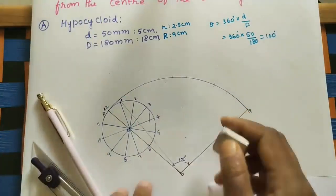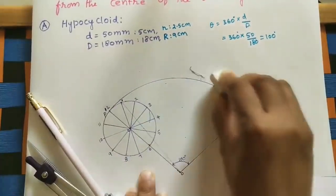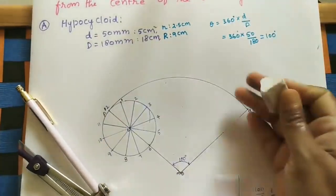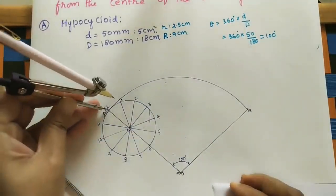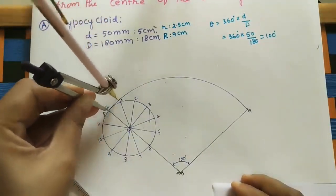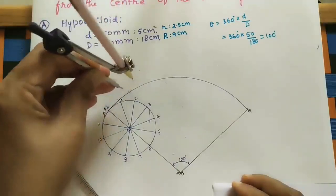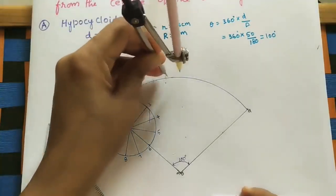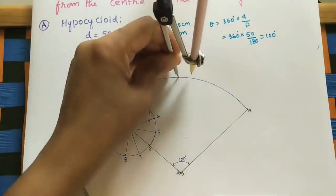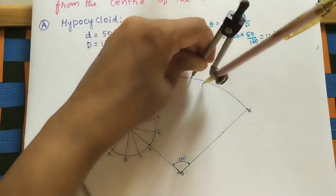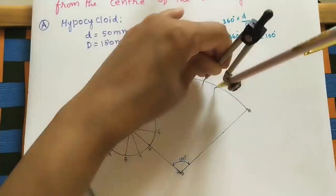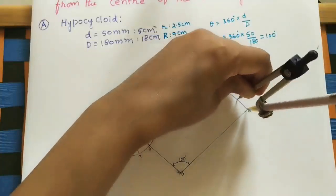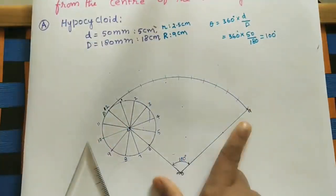Remove the previous arcs and take a slightly smaller radius. Repeat the stepping process: mark the first part, second, third, and continue until we get exactly 12 equal divisions on the 100-degree arc. This is the trial and error method for equal division.